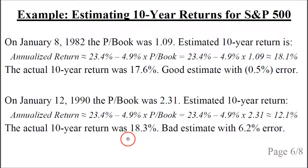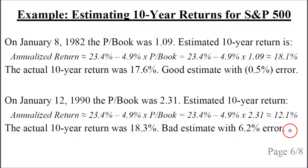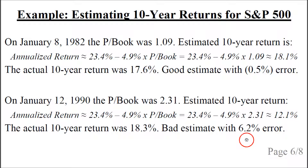However, the actual return over the next 10 years was 18.3%, because this was a time of a great bull market for the S&P 500. So our estimated 12.1% annualized return was quite bad — the error was 6.2 percentage points, and over 10 years that compounds to a substantial estimation error.